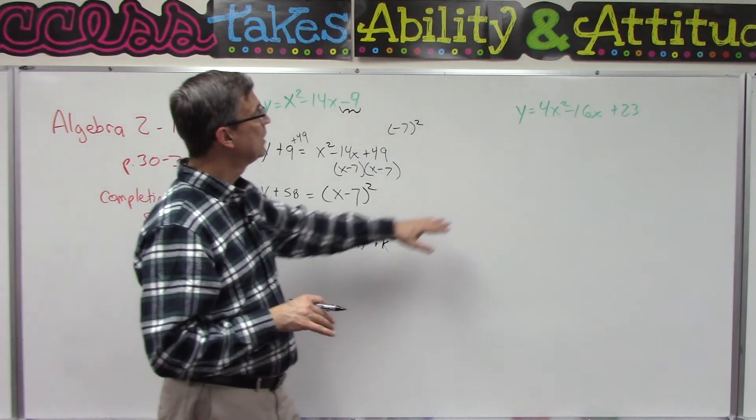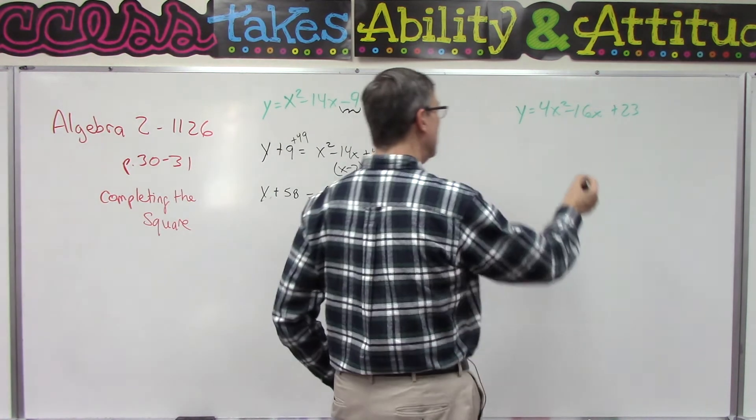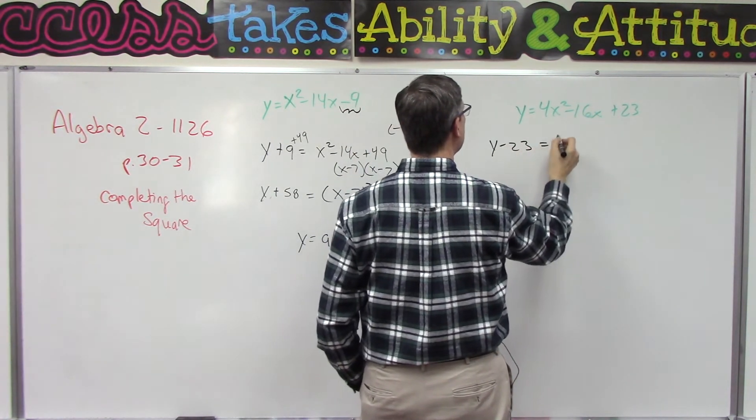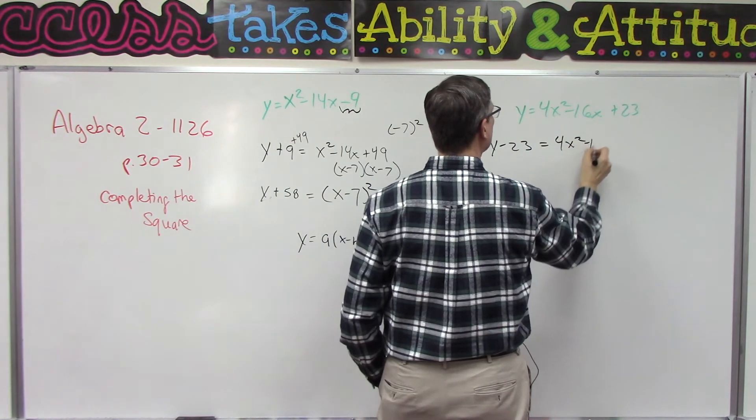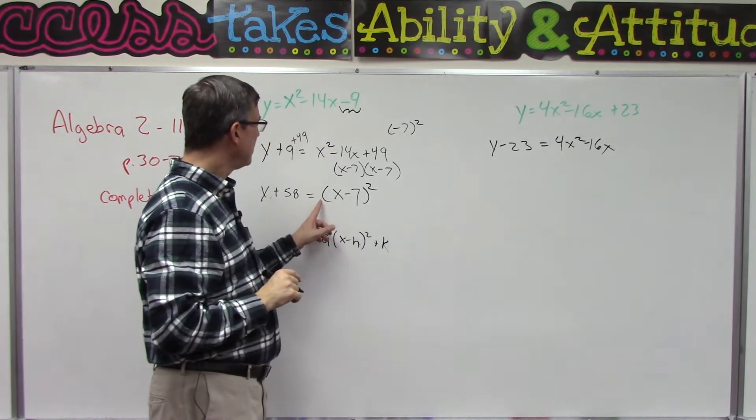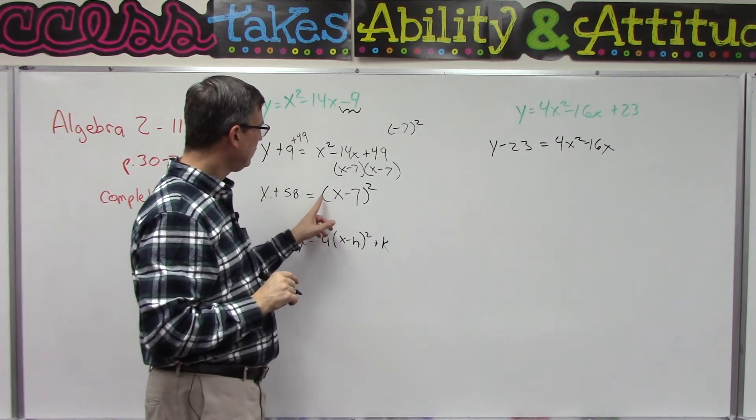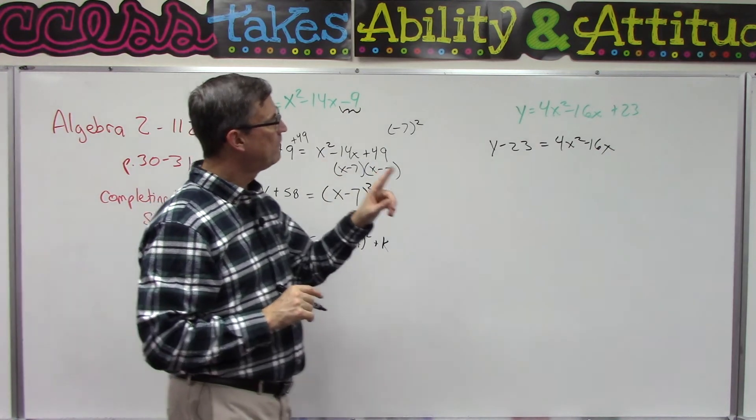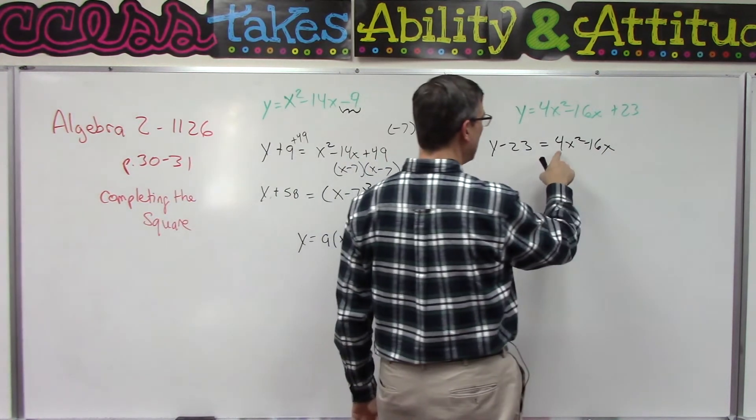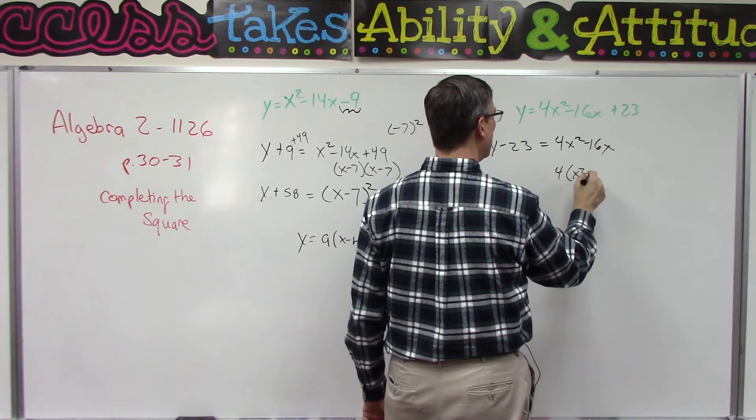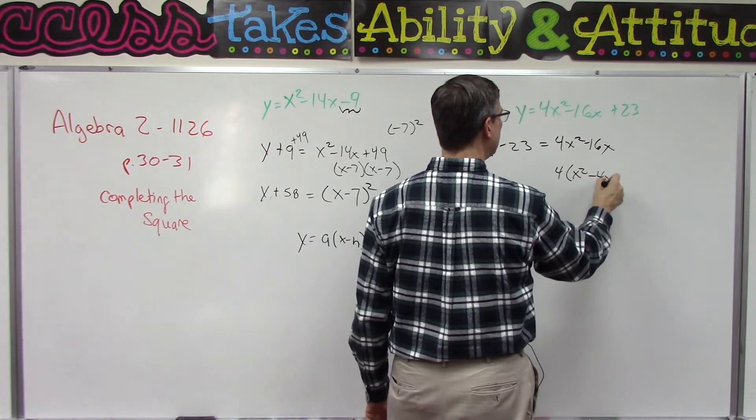Let's take this one here. Now again, the first step: subtract 23, so y minus 23. There's something different we have to do here. This has to be just x. So if there's a common factor—like in this case we can factor a 4 out—then I need to pull that out front: 4 times (x squared minus 4x).